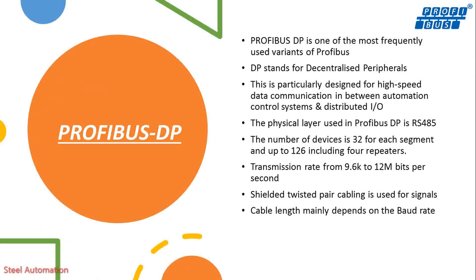Profibus DP is one of the most frequently used variants of Profibus. DP stands for Decentralized Peripherals. It is particularly designed for high-speed data communication between automation control systems and distributed I/O. The physical layer used in Profibus DP is RS-485.